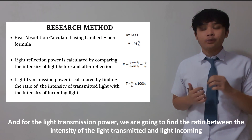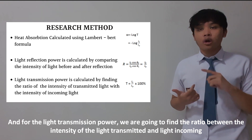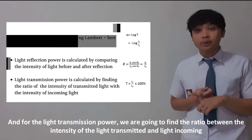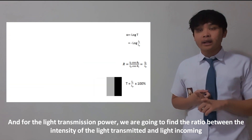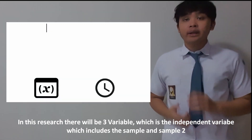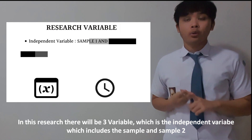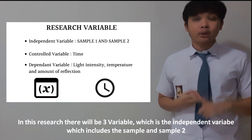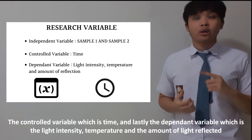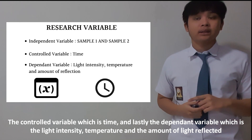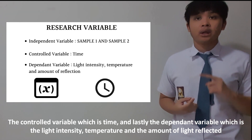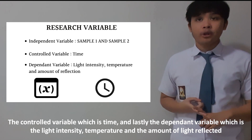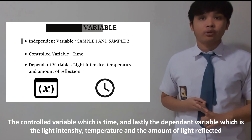For the light transmission power, we are going to find the ratio between the intensity of the light transmitted and the light incoming. In this research, there will be three variables: the independent variable, which includes Sample 1 and Sample 2; the control variable, which is time; and lastly the dependent variable, which is the light intensity, temperature, and the amount of light reflected.